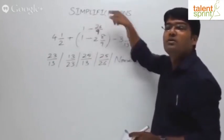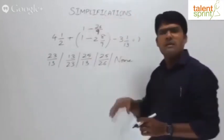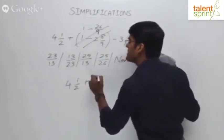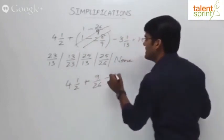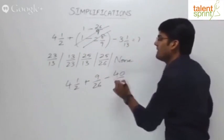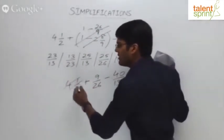So 1 into 9 by 26, how much is that overall? 9/26. This part comes out to be 9/26. So 4 and 1/2 plus 9/26 minus 3 and 1/13 can be taken as 39 plus 1, 40/13. And 4 and 1/2 can be taken as 9/2.